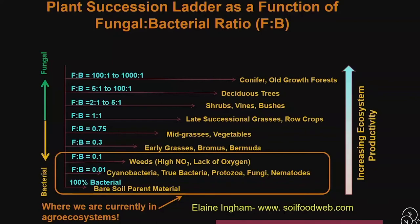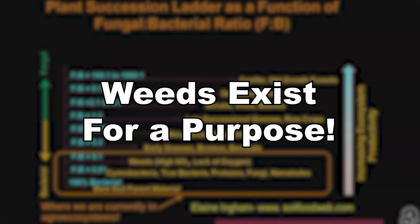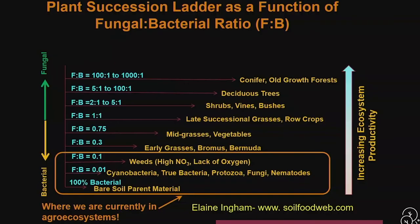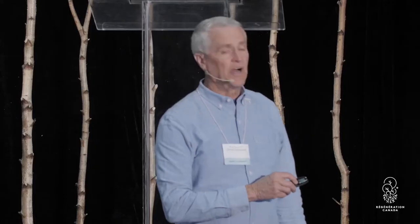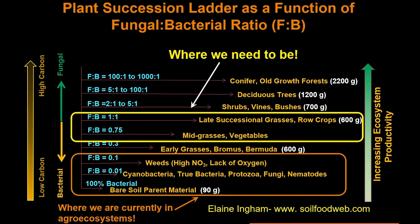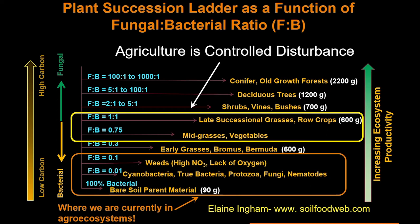We do weeds really well. Now weeds are a misnomer — weeds are there for a purpose. They are there to improve that soil, to move that soil up to the next level. But we keep disturbing it and we keep having weeds. We need to be here about one to one in order to grow the crops that we like to eat. But we also have to understand that to stay at that point of the ladder, agriculture is a controlled disturbance.